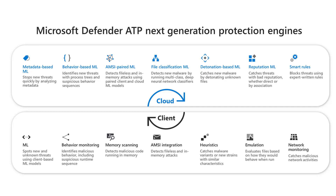Moving down to the bottom client layer: the machine learning engine is a set of machine learning models that make a verdict within milliseconds. These include specialized models built for specific file types commonly used by attackers — examples include portable executable files, PowerShell, Office macros, JavaScript, PDF files, and much more. The behavioral monitoring engine monitors for potential attacks post-execution, observing the behavior and behavioral sequence of processes at runtime to identify and block certain types of activities based on predetermined rules.